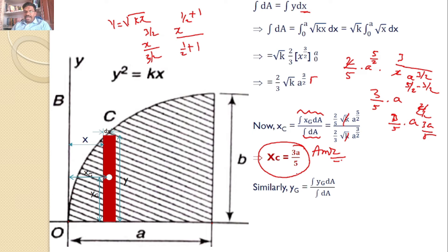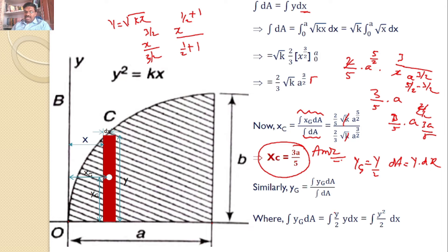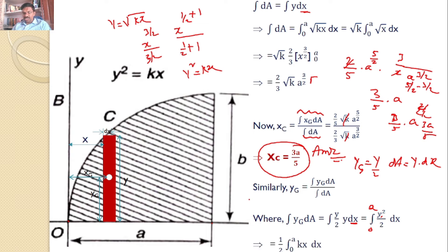Similarly, the y-coordinate of the centroid: y_c = ∫y_g·dA / ∫dA, where y_g = y/2 (centroid of the vertical strip). So dA = y·dx and ∫y_g·dA = ∫(y/2)·y·dx = ∫(y²/2)·dx. Since y² = kx, this becomes (1/2)·∫₀ᵃ kx·dx with limits 0 to a.